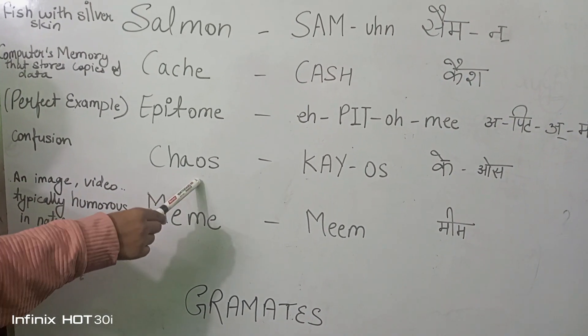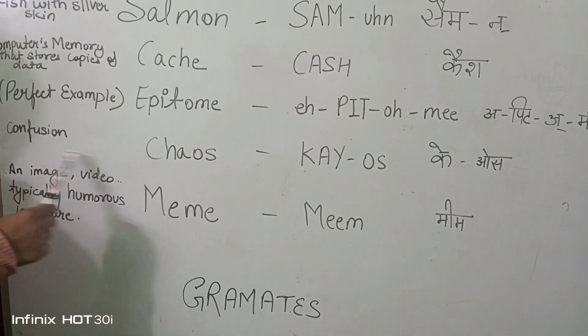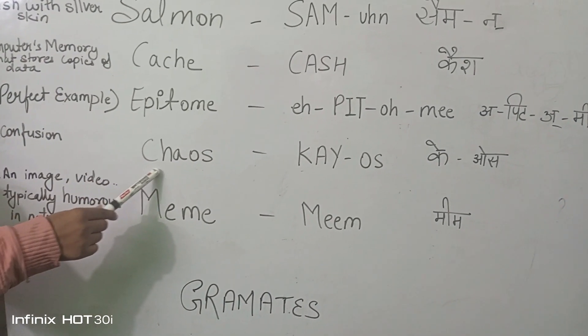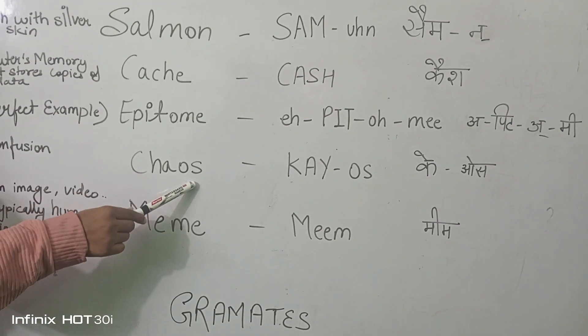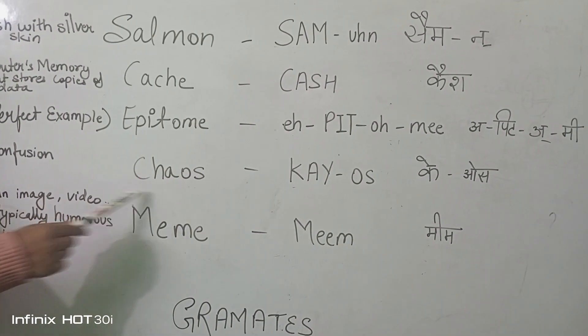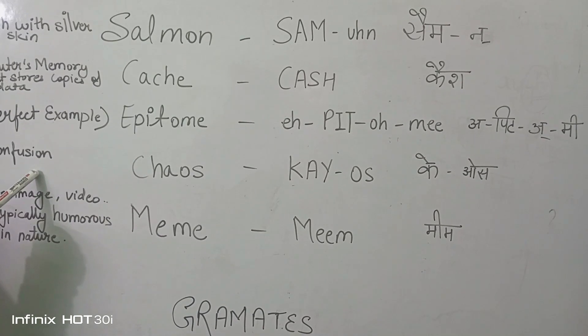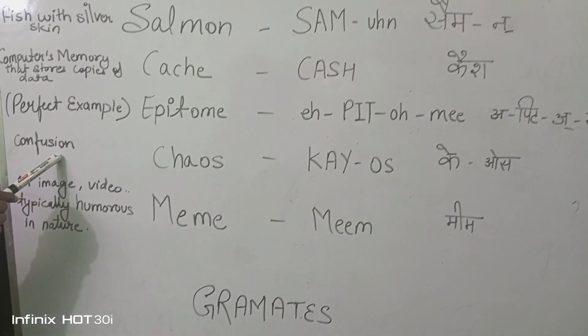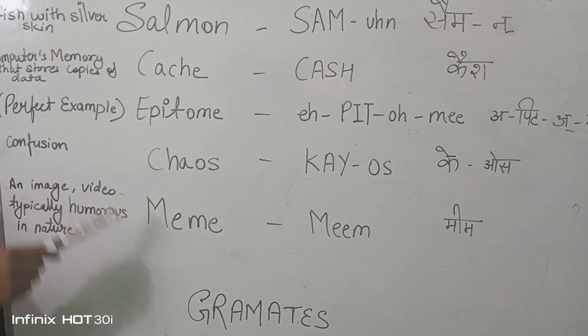Next one is chaos. We do not say 'chaos' — it's chaos. It means confusion, or in Hindi, if we say 'astvyastha'.